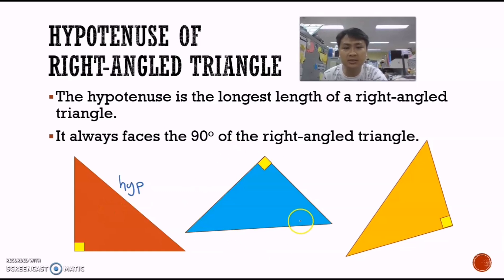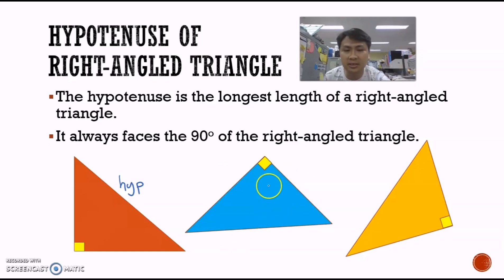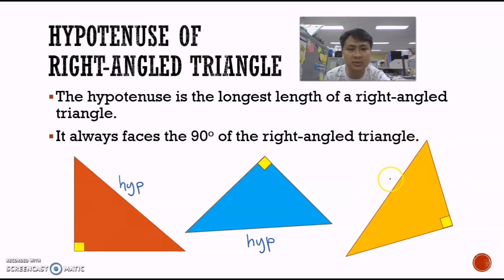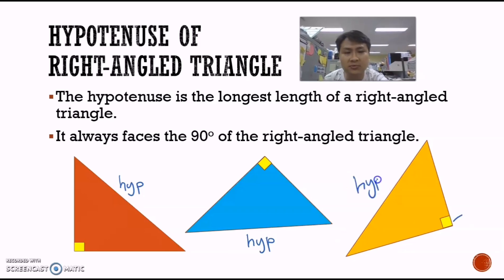Let's take a look at this example — which one is the hypotenuse of the right angle triangle? This length is facing the 90 degree, so this length will be the hypotenuse. Similarly for the next triangle, this line over here is facing the 90 degree, so therefore this length is the hypotenuse of the right angle triangle.